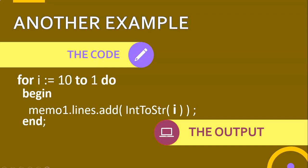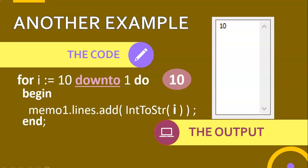I want to go from ten to one - backwards - which you can do if you change 'to' to 'downto'. If you use 'downto', your starting value must be the bigger number and your end value must be the smaller number. In this case, 'i' starts at ten, displays ten, then decreases by one to become nine, displays nine, then eight, seven, six, five, four, three, two, one - displaying each value until the loop stops. That's how you can go backwards.